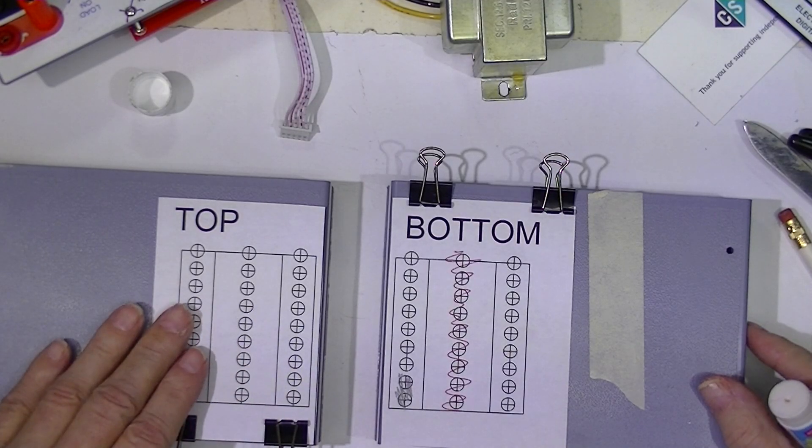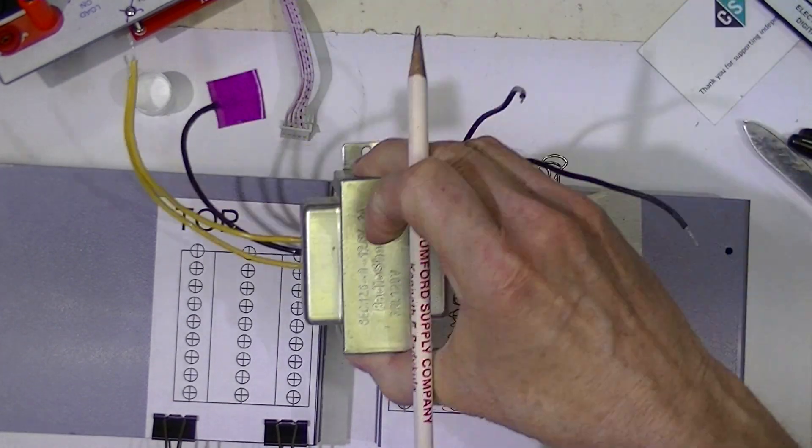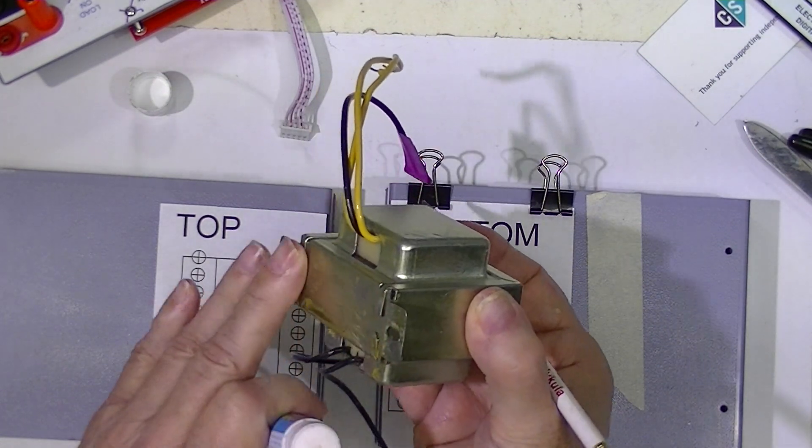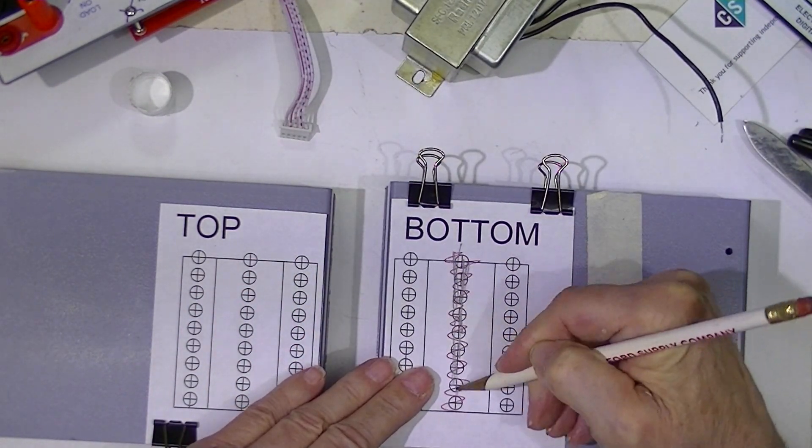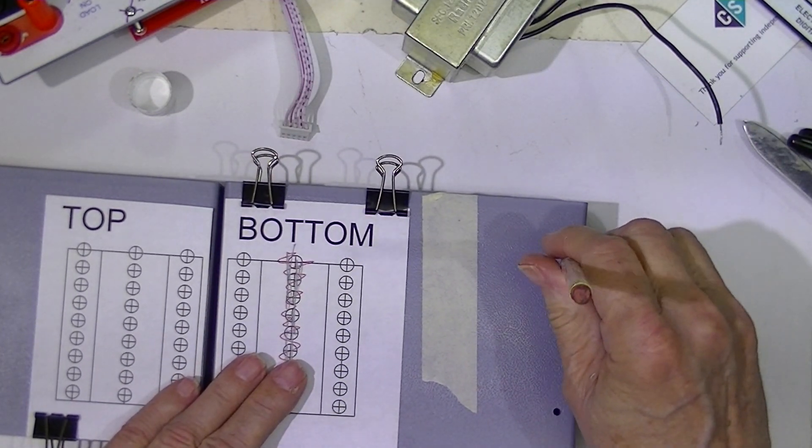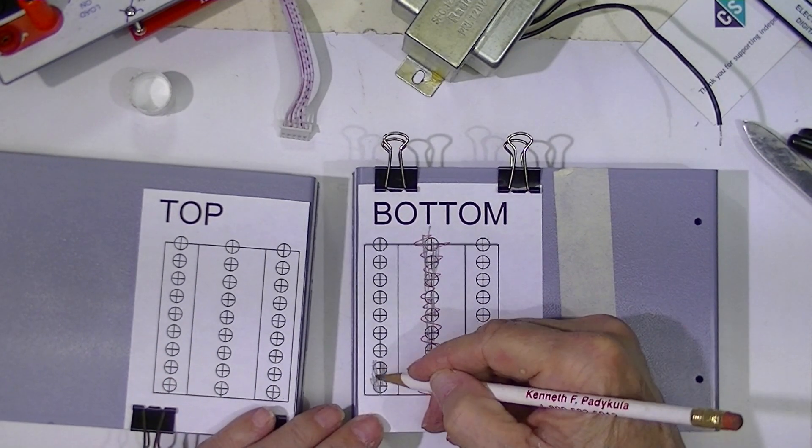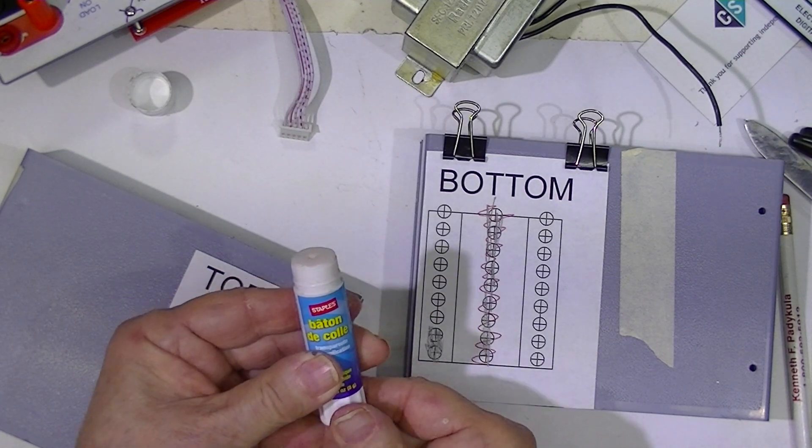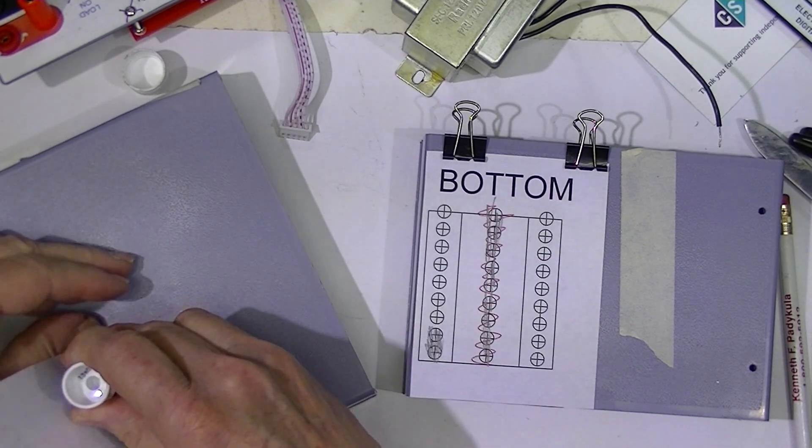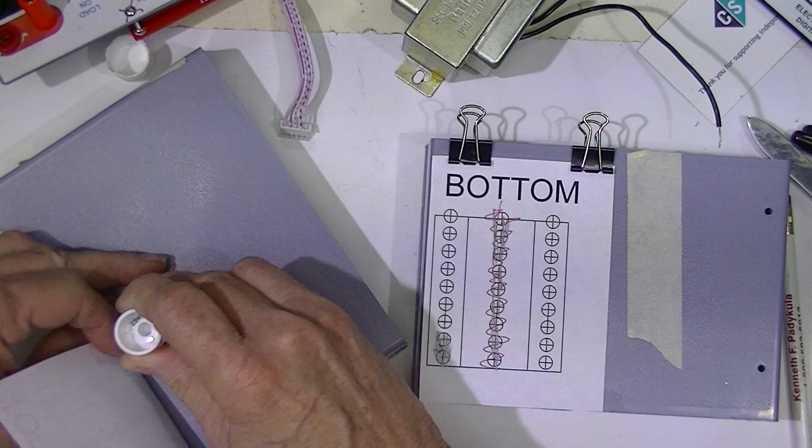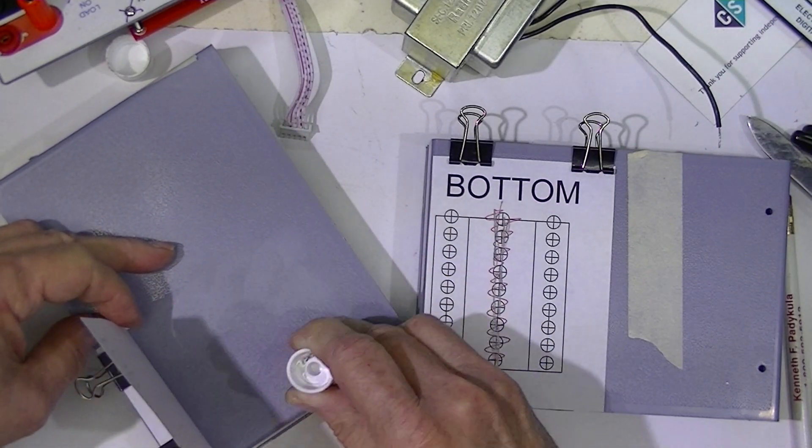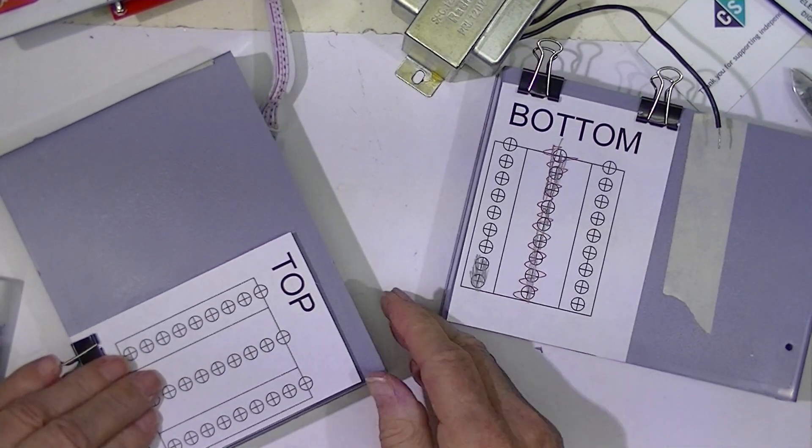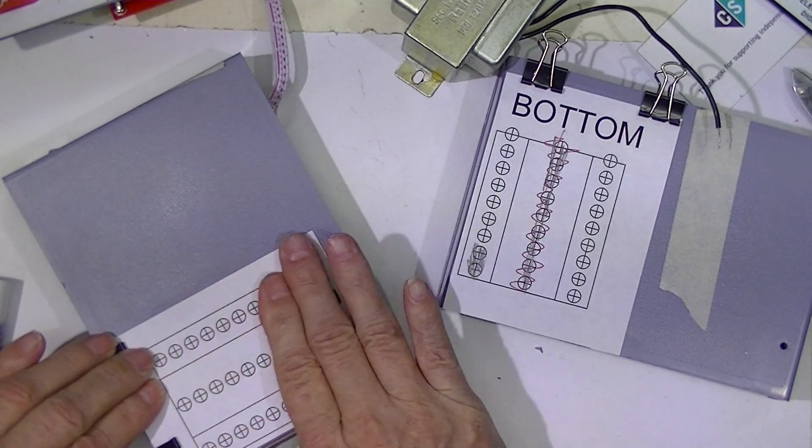I've decided to drill vent holes in the top and the bottom where this transformer is going to be mounted. Now, since the bottom center fits flush with the case, I'm not going to drill these holes. And because of the mounting holes, or the assembly holes, I'm not going to drill these two holes.